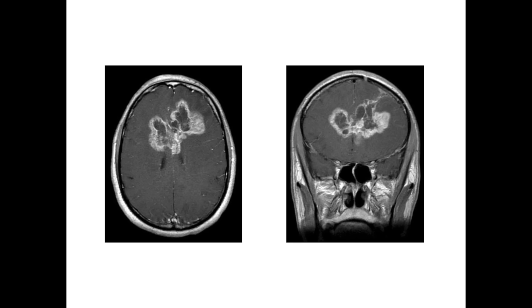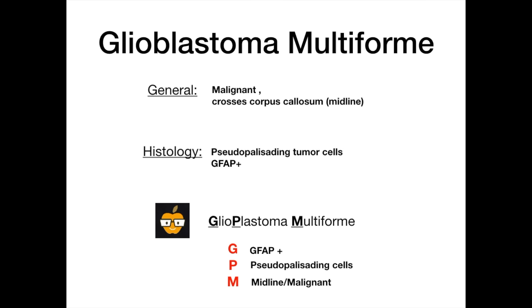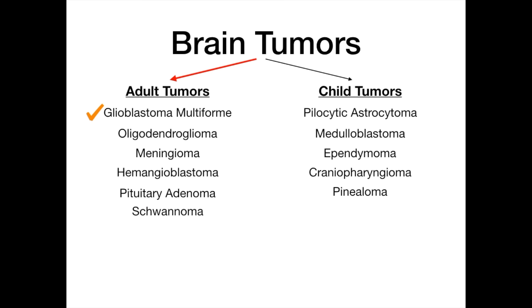The mnemonic for GBM is 'glioblastoma multiforme' — we just change the B to a P. G stands for GFAP positive, P for pseudopalisading cells, and M for both midline and malignant. So GPM: GFAP, pseudopalisading, and midline/malignant. If you use this mnemonic, it beautifully summarizes all the high-yield buzzwords, and if you see any mention of that on exam day, you know it's a glioblastoma multiforme.